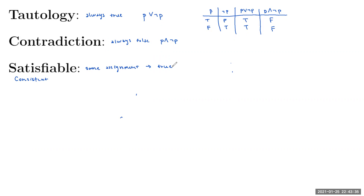We often wonder how we can show a compound proposition is one of these three states. The most straightforward way is to use a truth table. However, if your compound proposition has four or five different propositions — like p, q, r, s, t — you'd be making a very large truth table. It's a valid method for getting the correct answer, especially when there aren't many propositions involved.